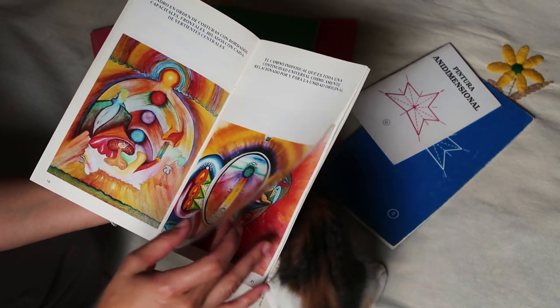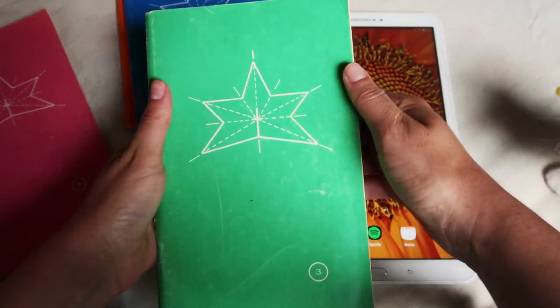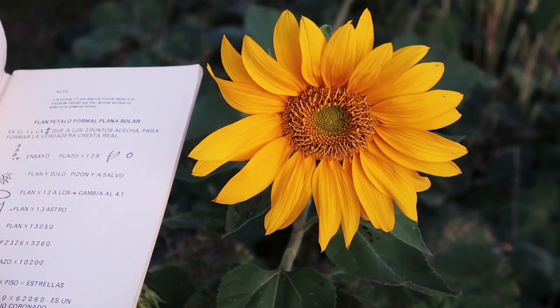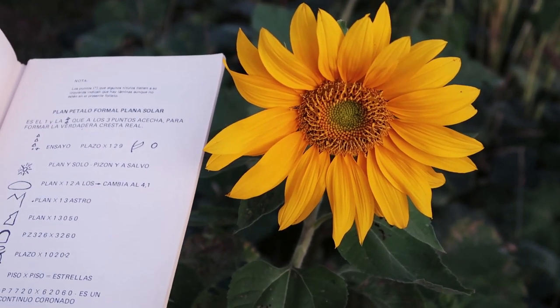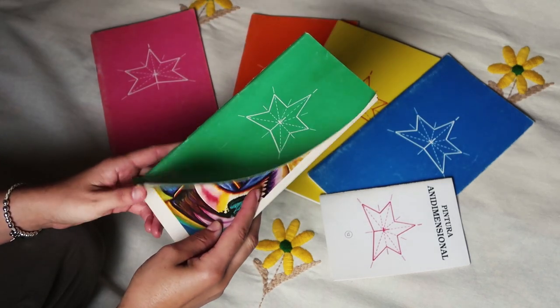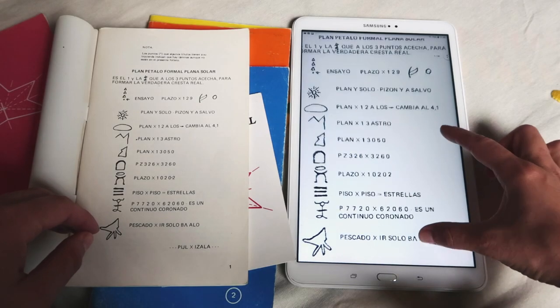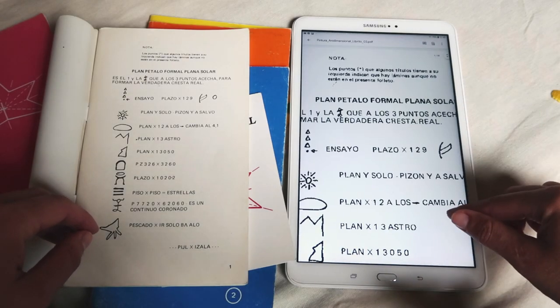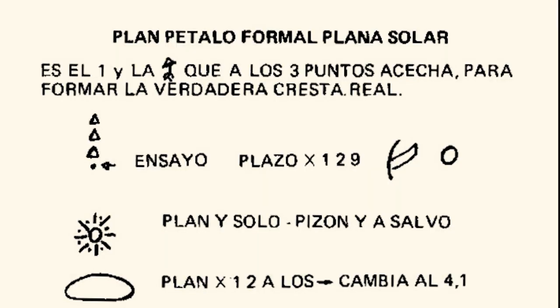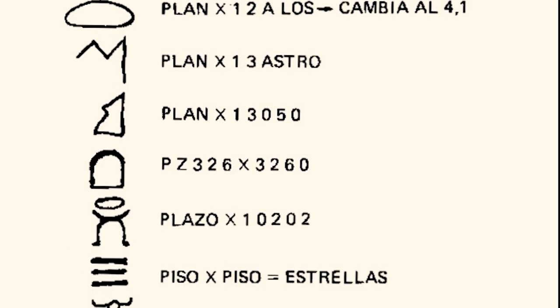Dentro de lo que es la pintura nidimensional, en un libro de color verde de los que regala Edgardo Marranti a las personas que asisten a sus charlas, en el número 3, si uno lo abre en la primera hoja, en lugar de encontrarse con un cuadro o con un escrito, uno se encuentra con una serie de lenguajes, de símbolos, de códigos, como si fueran de computadoras, que se llama el Plan Pétalo Formal Plana Solar.